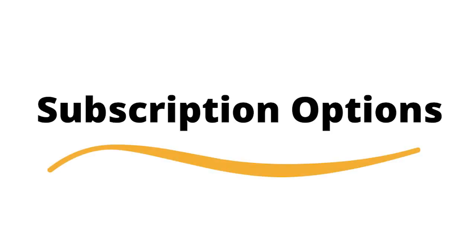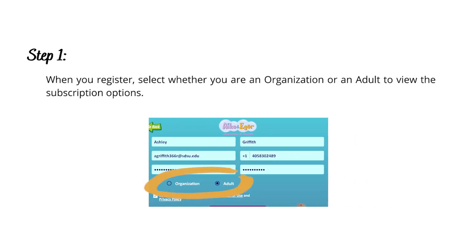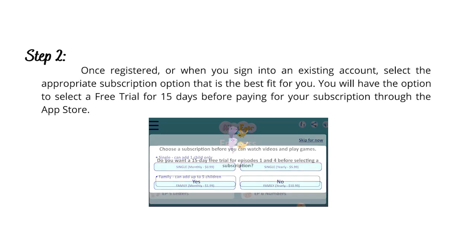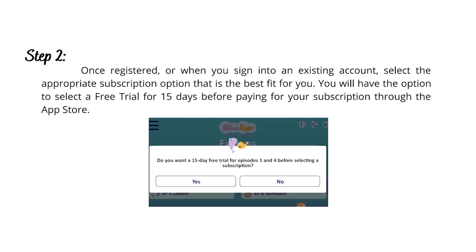Step 6: Subscription Options. Step 1: When you register, select whether you are an organization or an adult to view the subscription options. Step 2: Once registered, or when you sign into an existing account, select the appropriate subscription option that is the best fit for you. You will have the option to select a free trial for 15 days before paying for your subscription through the App Store.